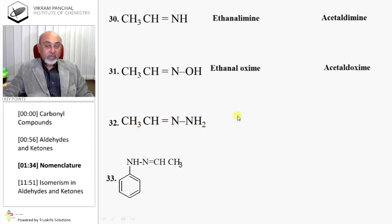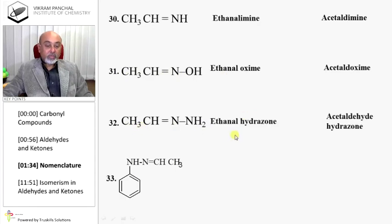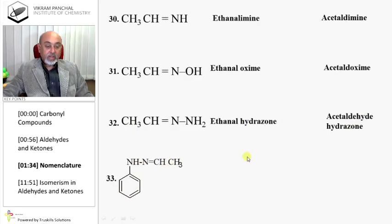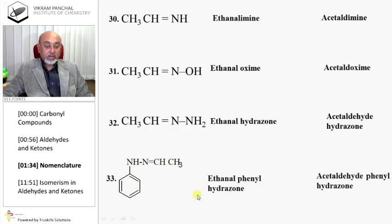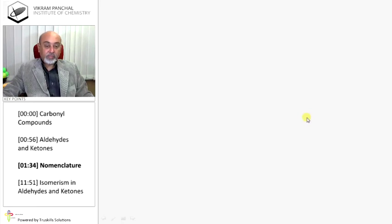C=NNH2 is known as a hydrazone. Obtained from ethanal, so it is ethanal hydrazone, or acetaldehyde hydrazone. C=NNH-benzene is known as a phenylhydrazone. Obtained from ethanal, so it is ethanal phenylhydrazone, or acetaldehyde phenylhydrazone.